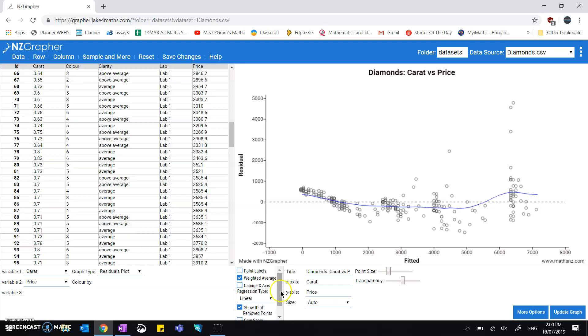If you've gone for using all of the data but a different type of line, so maybe a curve, then you can change the regression type down here from that linear to whatever model it is that you've chosen to do instead. And you can analyze the residuals from that and see if it's any better.